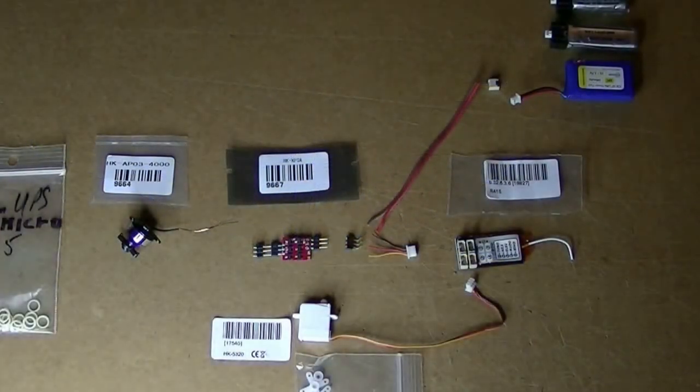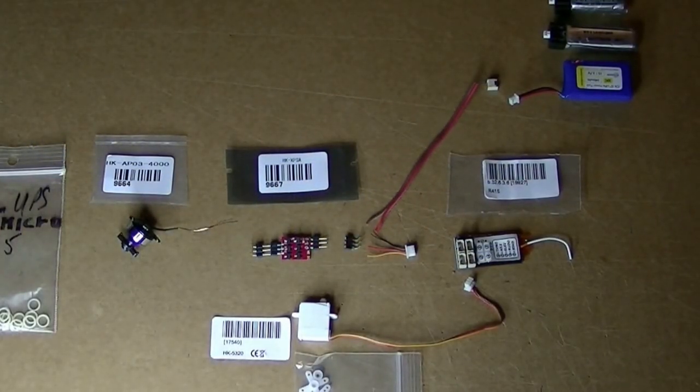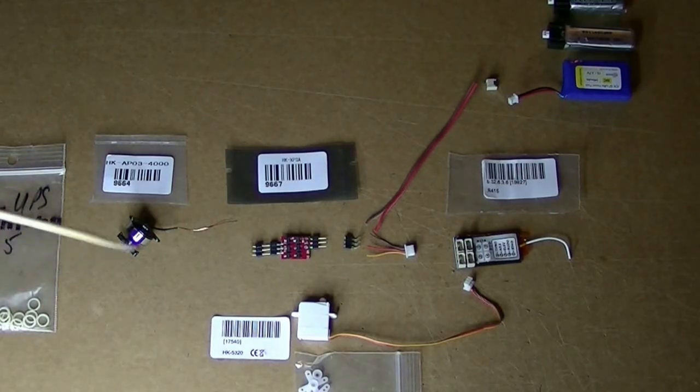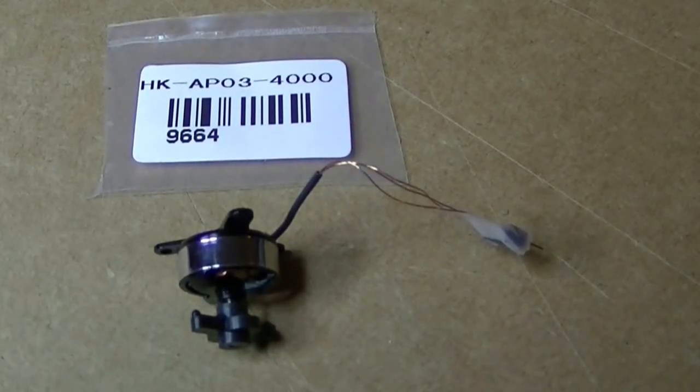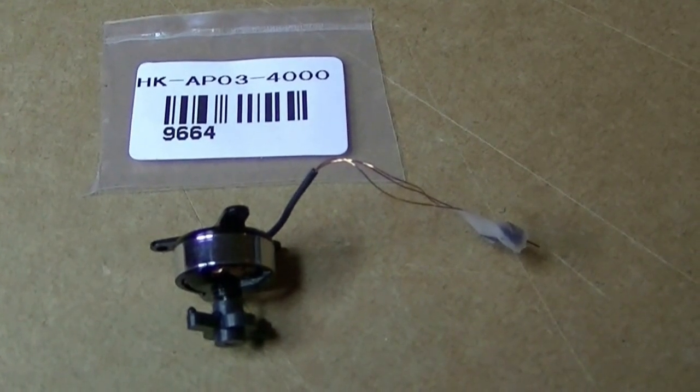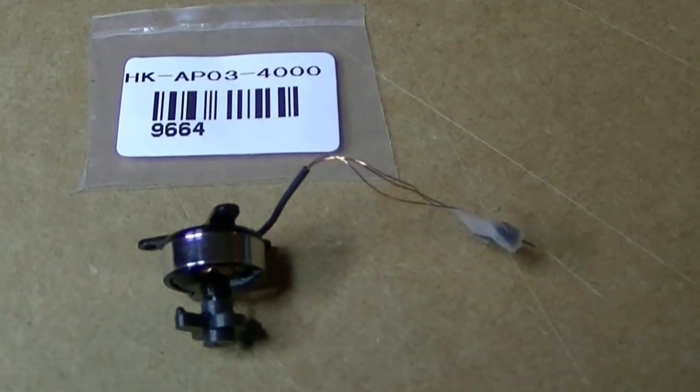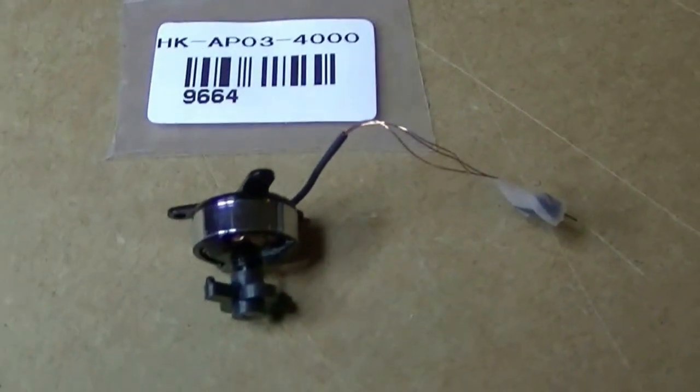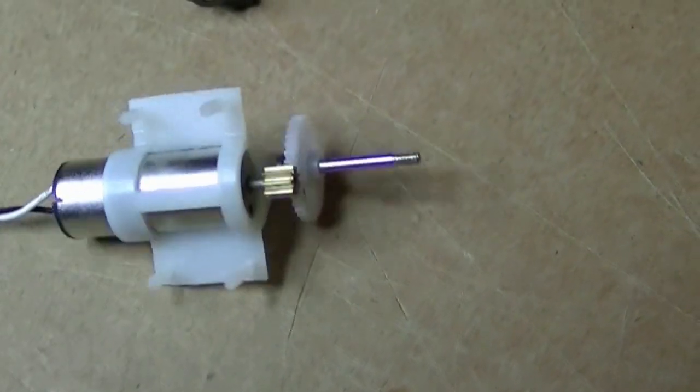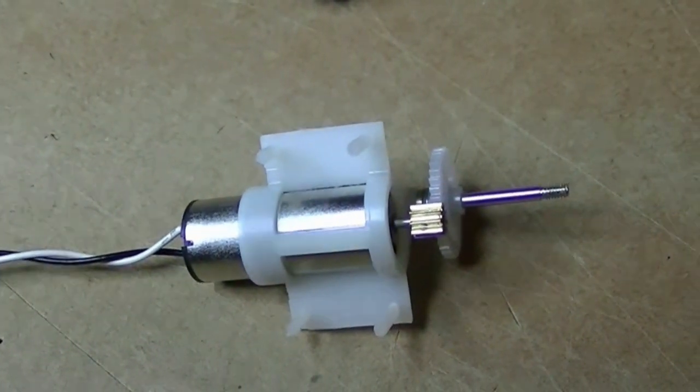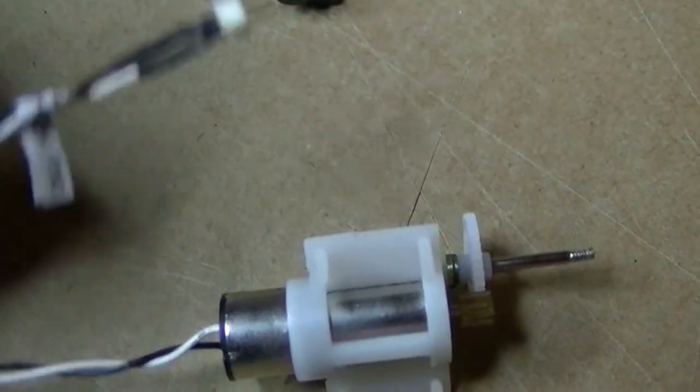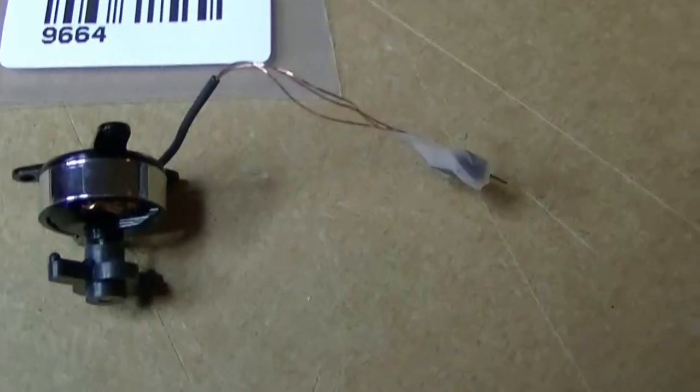This plane is going to be using a one-cell lipo power system composed of these major components. One is the Hobbyking APO3 4000kV motor. What makes this motor unique is it's a brushless AC motor, and the AC or alternating current is provided by the ESC. This is opposed to the other kind of motor, which is a brushed gear motor that gets current in a DC format or direct current from a different kind of ESC.